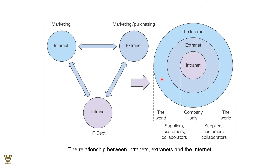The internet is the public network through which anyone with a browser can access the web and gain information. Within that is the extranet, where suppliers, customers, and collaborators interact — dedicated people for each domain or industry working within their area of expertise. The intranet, on the other hand, comprises only people within the organization — wholly owned and operated by the company.